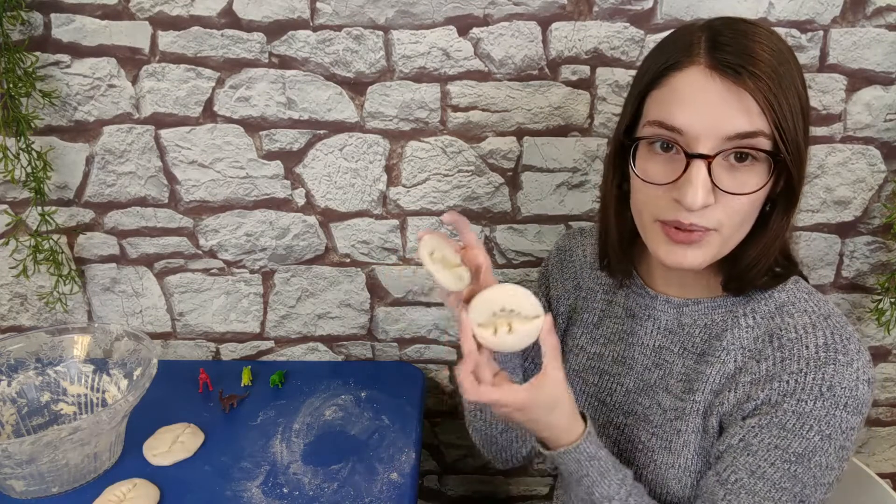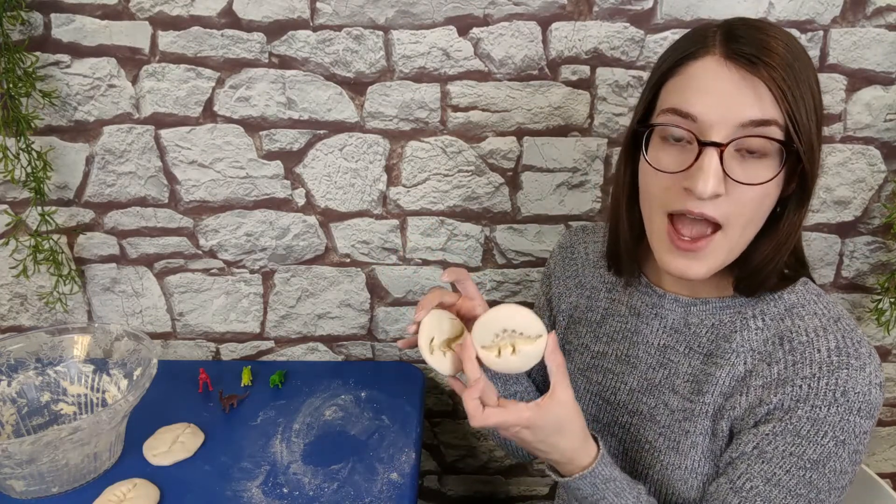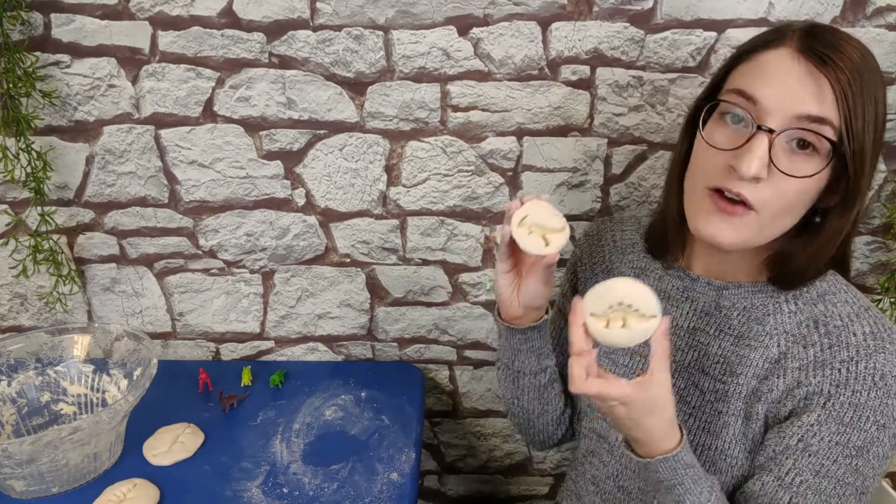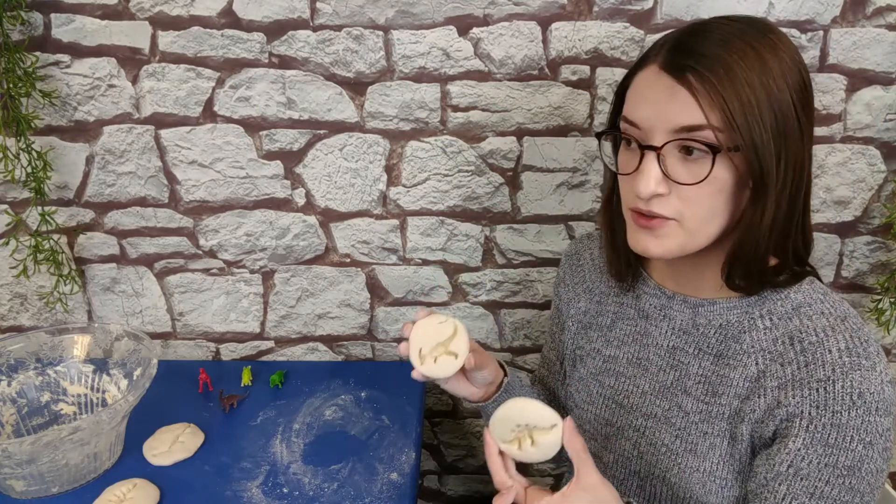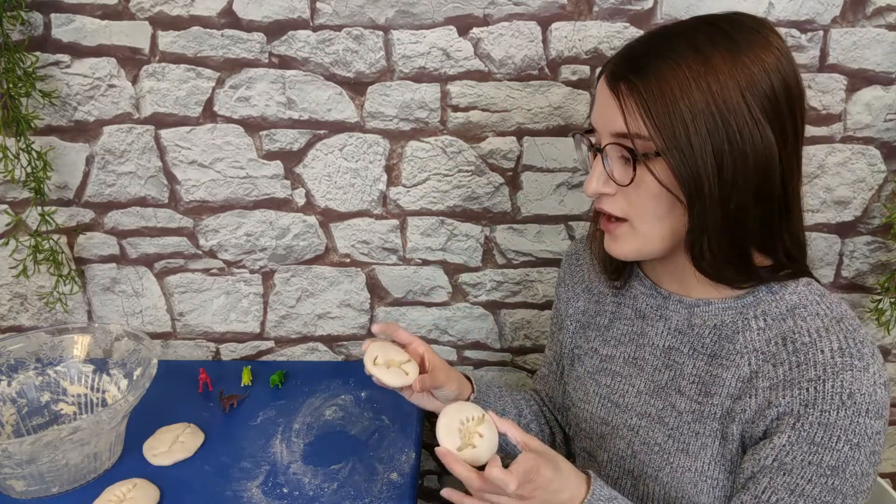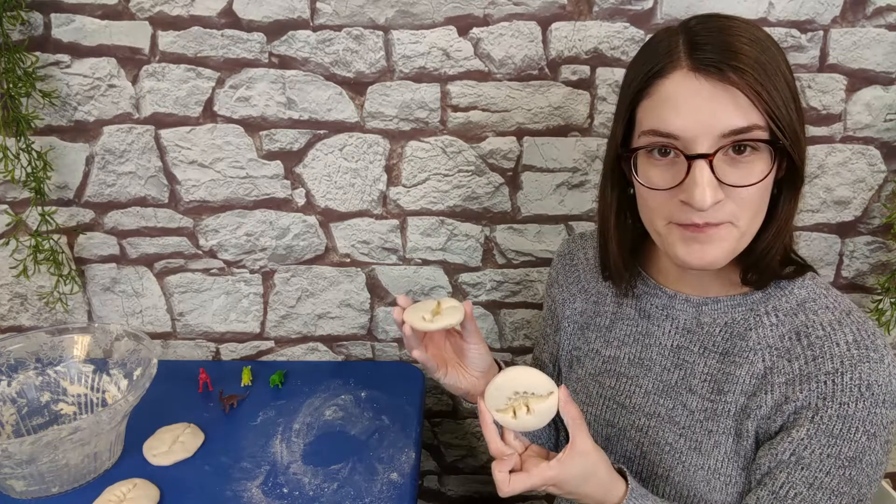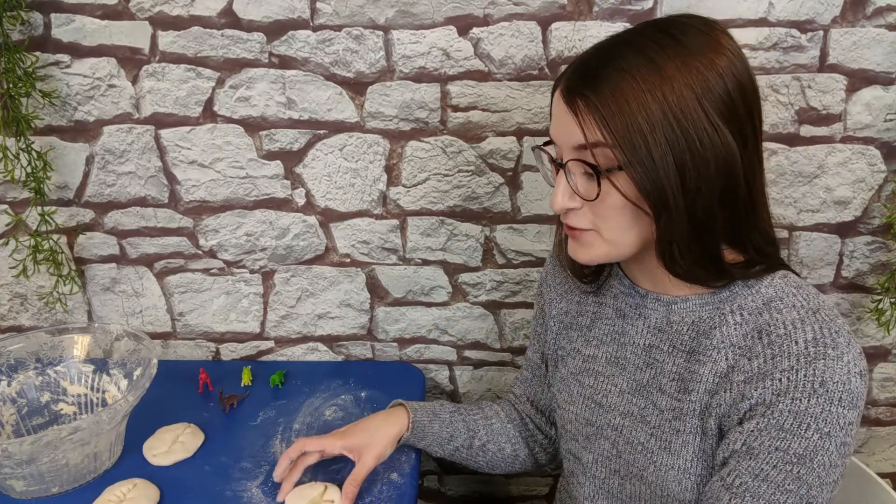Mix it all up. Knead it for five to eight minutes. Break it up into smaller little fossils. Press the toy inside. And then put it in the oven for a couple of hours at 250 degrees. And then paint it if you would like. That is all I have for you today. I hope you enjoyed your dinosaur fossils and the whole process of making these at home. I will see you next time. Bye!